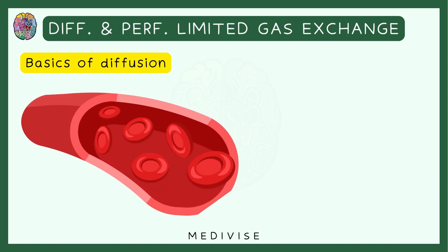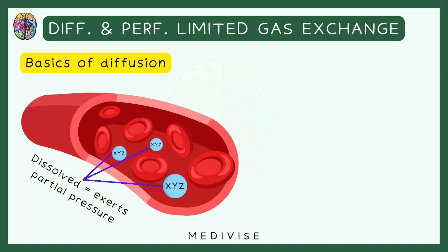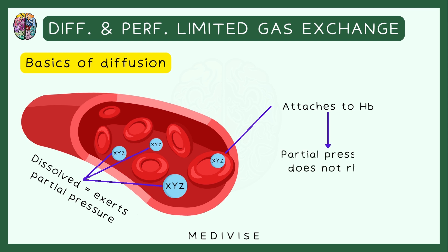Now there is another important thing to know. Whenever a gas is being diffused in a blood vessel, some gas is going to be dissolved in the blood, and some is going to go into the RBC and attach to the hemoglobin. The gas that is dissolved in the blood is going to exert the partial pressure. But the molecules of the gas that go and attach to the hemoglobin are not going to contribute to the partial pressure.